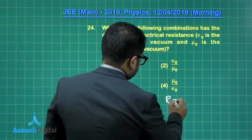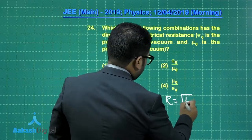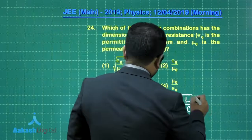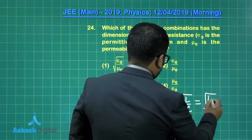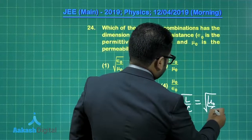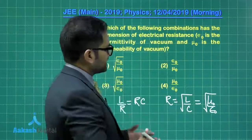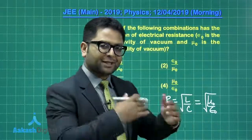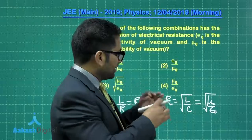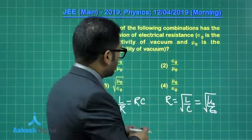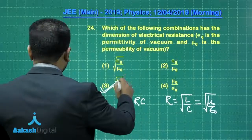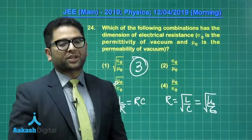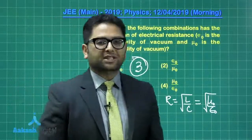Noting that capacitance is proportional to ε₀ times distance and inductance is proportional to μ₀ times distance, we get L/C = μ₀/ε₀. Therefore resistance equals √(μ₀/ε₀), giving option 3 as the correct answer. That concludes question 24, and we move on to question 25.